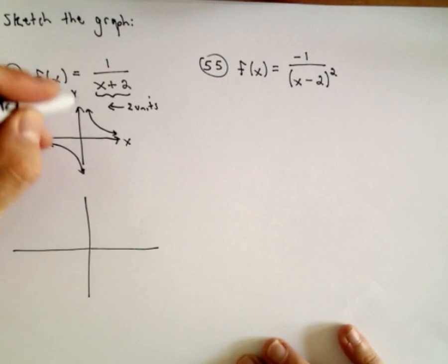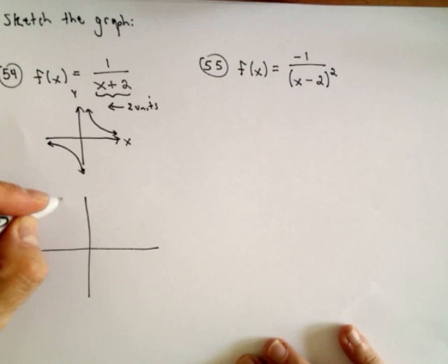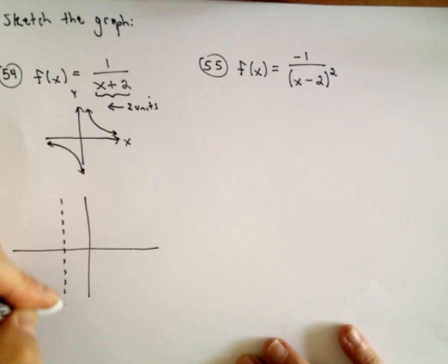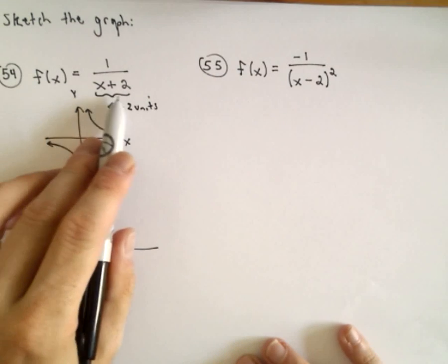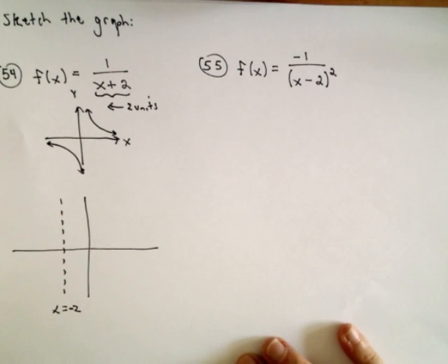So, instead of having a vertical asymptote sitting at the y-axis, it'll now be sitting at x equals 2. And again, that makes sense, right? I mean, if you plug in 2, or excuse me, at x equals negative 2, if you plug in negative 2, it's going to be undefined.